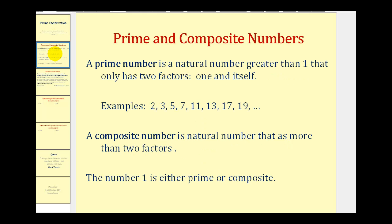A prime number is a natural number greater than one that has only two factors: one and itself. Here's a list of the first several prime numbers, and again these are prime because the only factors they have are one and itself.